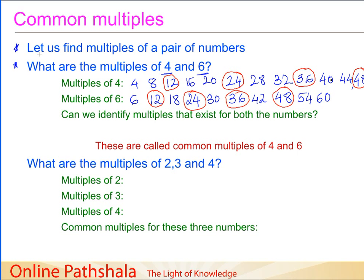So the common multiples for both numbers can be written as: 12, 24, 36, 48, and so on. These are the common multiples — if multiples exist for both numbers, they are called multiples common to both. So 12, 24, 36, and 48 are the common multiples for the numbers 4 and 6. Of course there could be more, but we have written these for the sake of space.